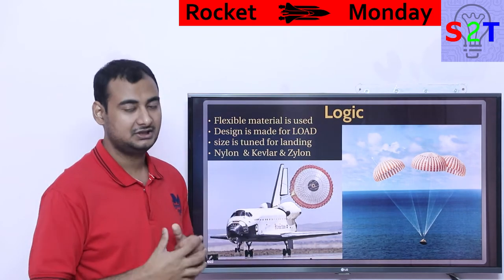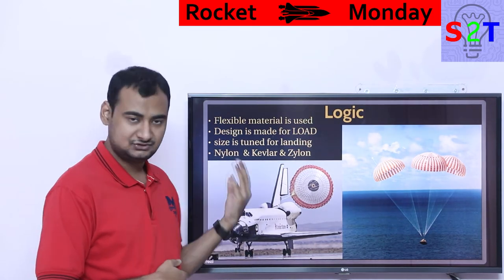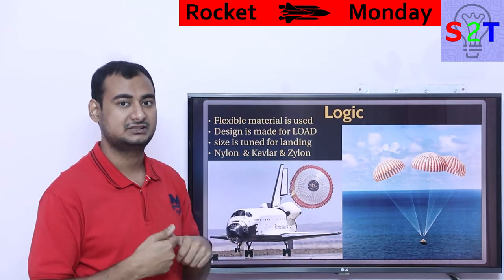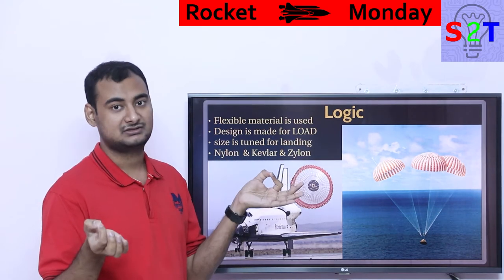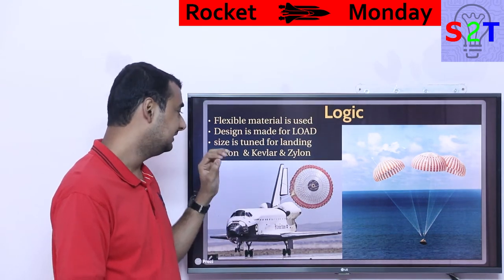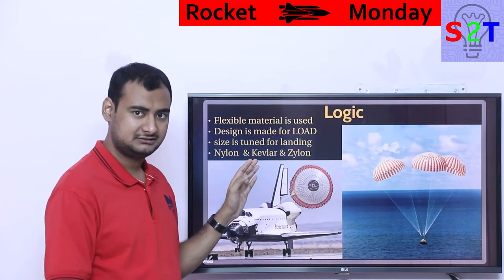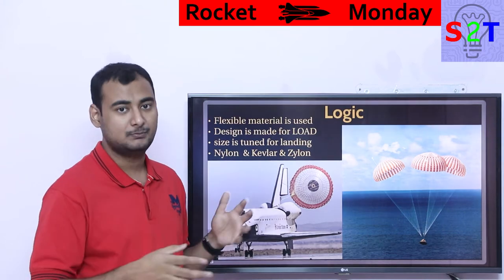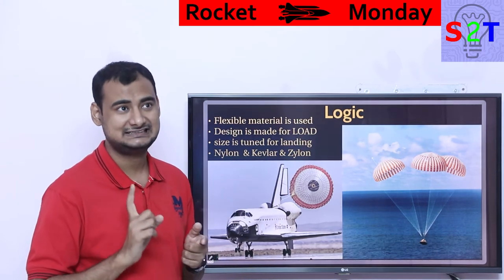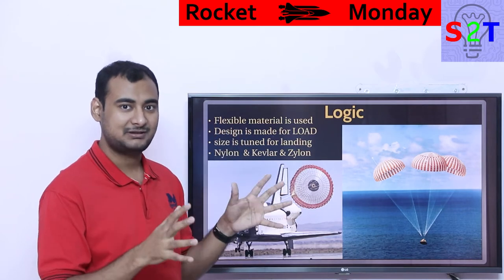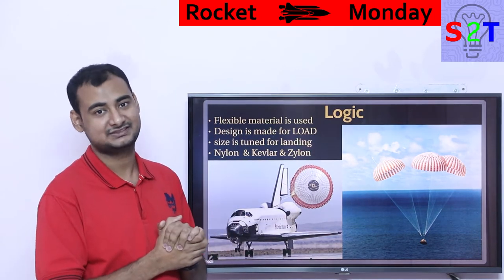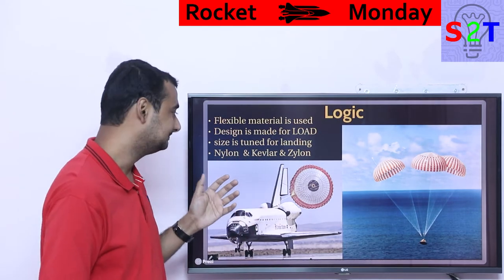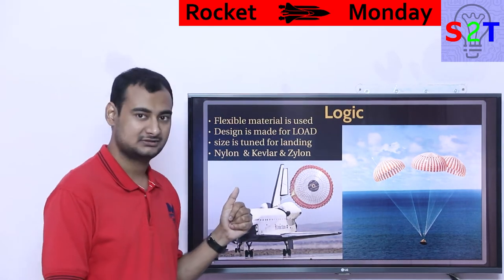For materials, we generally use nylon, and steel is used for cables — sometimes steel-braided, sometimes solid steel. One step above nylon is Kevlar, and one step above that is Zylon. Zylon is the bigger brother of Kevlar — it's much better in almost every way except longevity. If you build a parachute from Zylon, you have to use it within one to five years — you cannot manufacture it and then keep it on a shelf for 50 years.